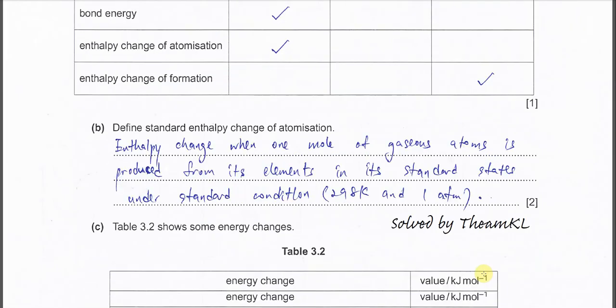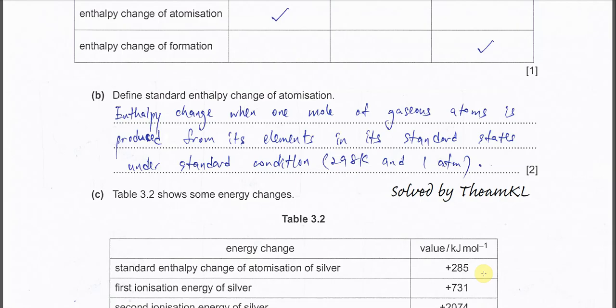Part B. Define standard enthalpy change of atomization. This one I told you just now. Enthalpy change when one mole of gaseous atom is produced. So this one must be there: gaseous atom, one mole, from its elements, and the elements must in the standard state. And also this happen under standard condition.